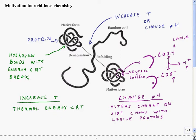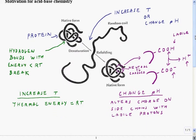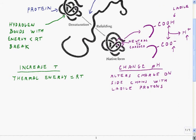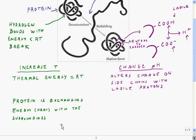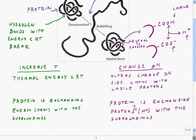Next we'll talk about what decides whether or not this side group has a proton. To do this, let's go back to the analogy with temperature. In that case, the protein is influenced by its environment because it's exchanging heat or energy with the surroundings. In the case of pH, the protein is also influenced by its surroundings, but in this case it's because it's exchanging protons with the surroundings. So in temperature, we're exchanging heat; in pH, we're exchanging protons.